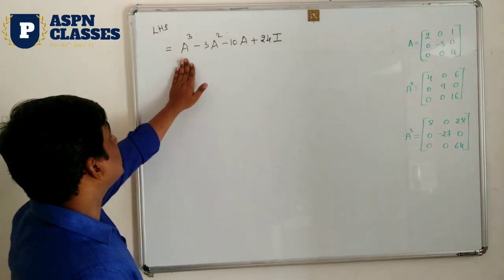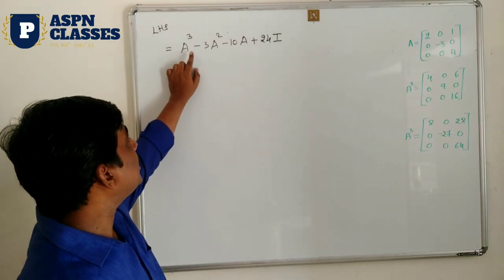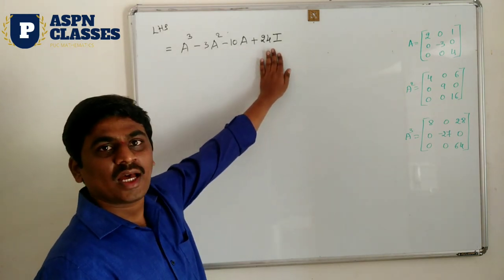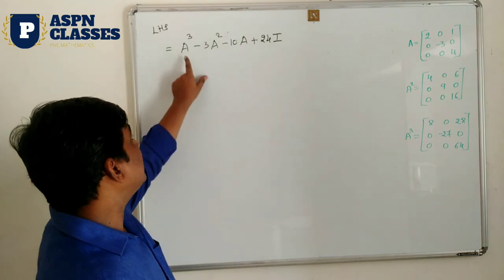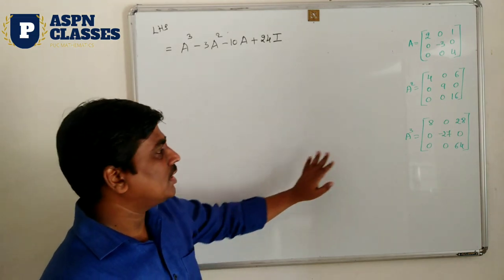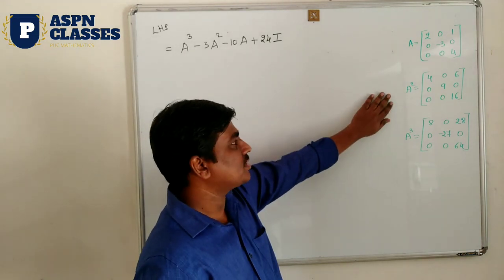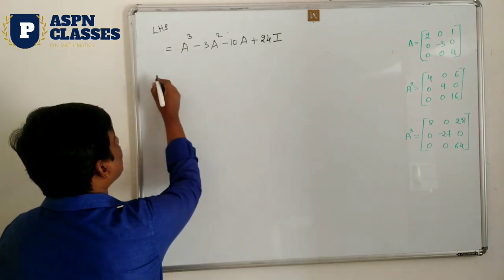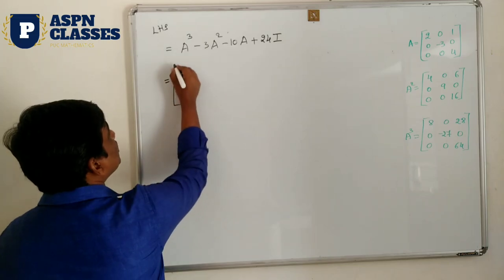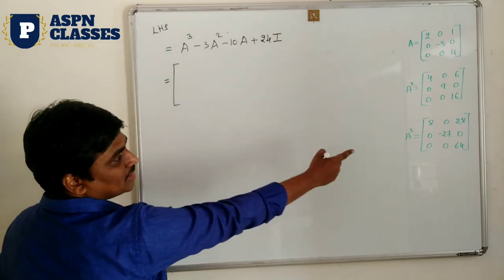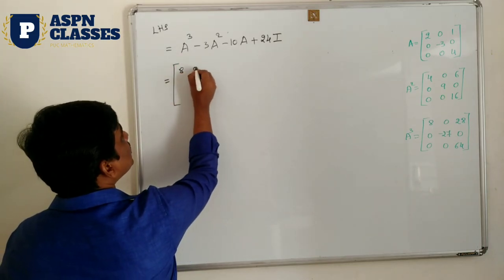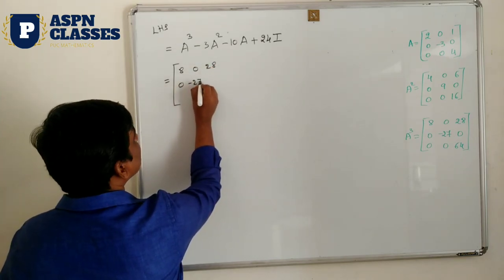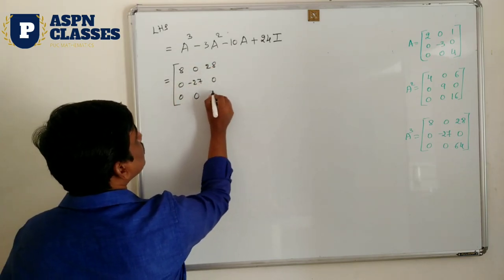Now the actual question: the LHS is A³ - 3A² - 10A + 20I. I is the identity matrix. A cube result is already found. Fill in the values: A cube = [8, 0, 28; 0, -27, 0; 0, 0, 64].